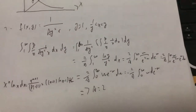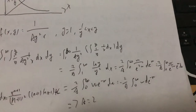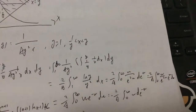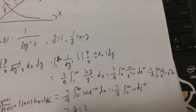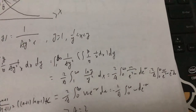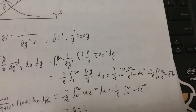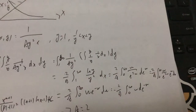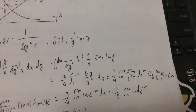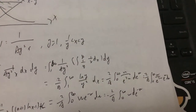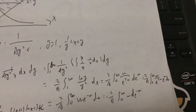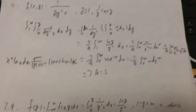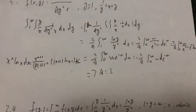We integrate from 1 over y to y with respect to x, then integrate over y. This gives minus 2 over a, and setting the total equal to 1, we get a equal to 2.